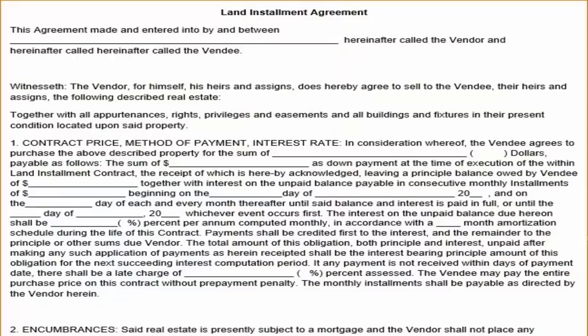In a land contract, unlike a note and mortgage or a note and deed of trust, there is only one document — the land contract itself. That contract serves as both the contract for sale and a lien instrument on the property. If the buyer does not record this, the seller still appears to be the owner of record. It's in the buyer's best interest to record the contract to evidence their rights in the property.